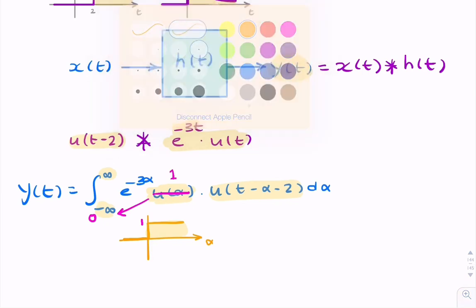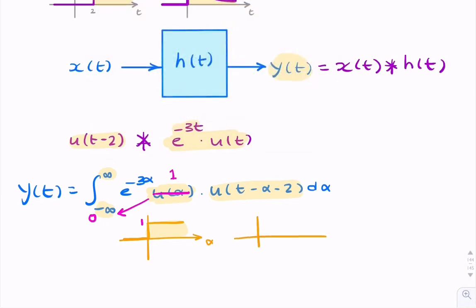And we can do the same with the other unit step. So this unit step is reversed because we've got the minus α. And if you're uncertain how to sketch this, what you do is you take this argument, so t minus α minus 2, and set it to zero, that gives you α equals t minus 2.